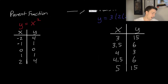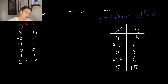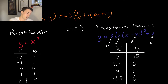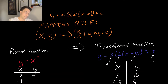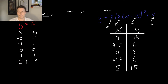Before we do that, let's review the mapping rule using the parent function x squared. This gives us points like (−2, 4), (−1, 1), (0, 0), and so on. Now we're going to apply a transformation of the form a·f(kx − d) + c. You can note the a, k, d, and c values represented here. So we look at the points on the parent function first, then apply these transformations to both the x and y coordinates to get our transformed graph.